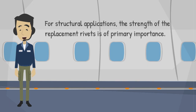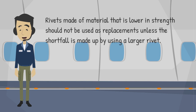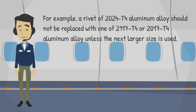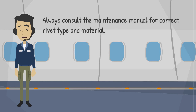For structural applications, the strength of the replacement rivets is of primary importance. Rivets made of material that is lower in strength should not be used as replacements unless the shortfall is made up by using a larger rivet. For example, a rivet of 2024-T4 aluminum alloy should not be replaced with one of 2117-T4 or 2017-T4 aluminum alloy unless the next larger size is used. Always consult the maintenance manual for correct rivet type and material.